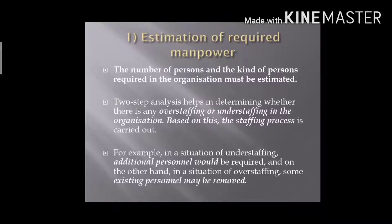Within the same organization there are different departments. According to departments, how many people and what qualification of people are required will differ. For example, what kind of people are required for the planning department, production department, and finance department — the qualification and number of people required will vary by department. So at the initial stage you must calculate how many and what kind of people are needed.